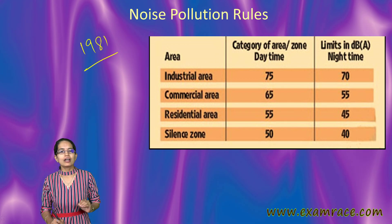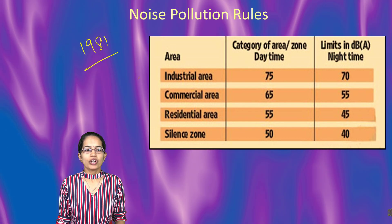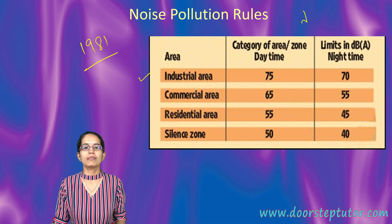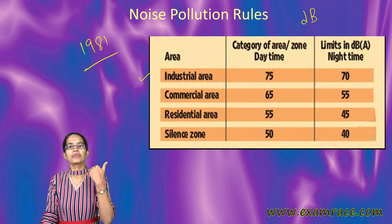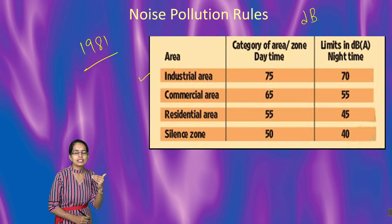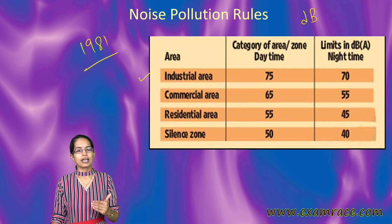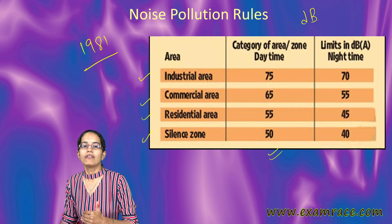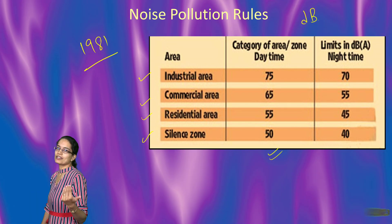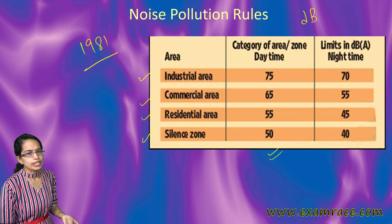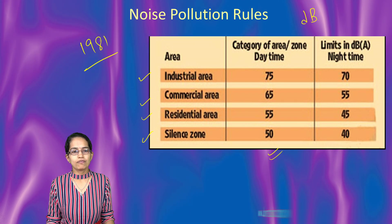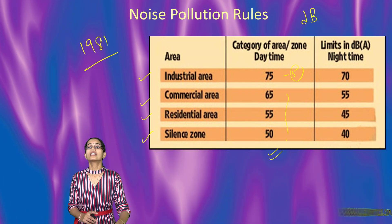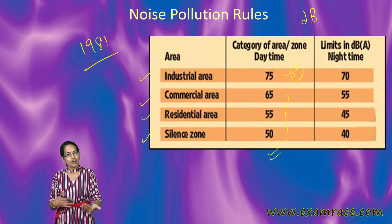When we talk about the permissible limits, decibel is the unit used to measure noise. For industrial areas during the daytime it's 75 decibels, commercial it's 65, residential 55, and silent zone 50 decibels during the daytime. During the night time it's 40 decibels for silent zones. There is a difference of 10 in each of these, and a difference of 5 in the case of industrial regions because some industries work during the night as well.